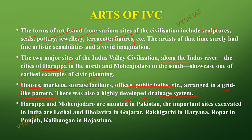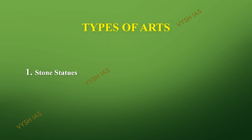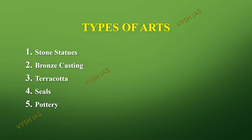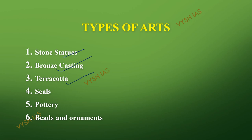The important sites of Harappan civilization in India include Lothal and Dholavira in Gujarat, Rakhigarhi in Haryana, Ropar in Punjab, and Kalibangan in Rajasthan. The types of art found in Indus Valley Civilization are: stone statues as three-dimensional representations, bronze statues, terracotta jewelry and terracotta toys, seals, pottery, beads and ornaments — all of which were found in Indus Valley Civilization.